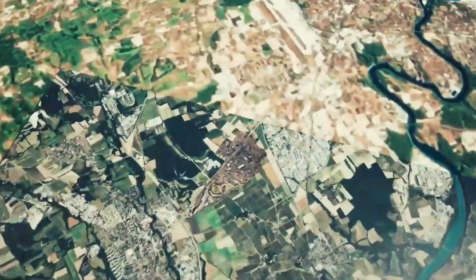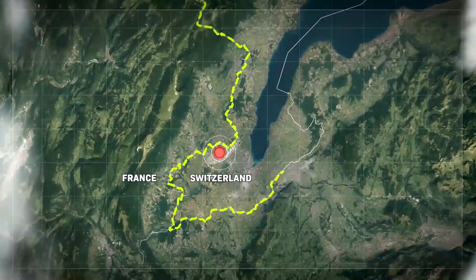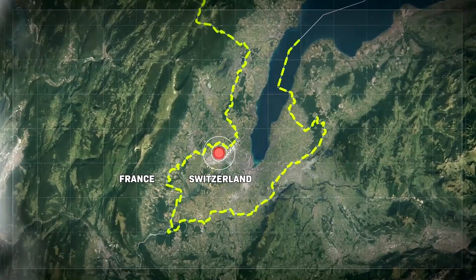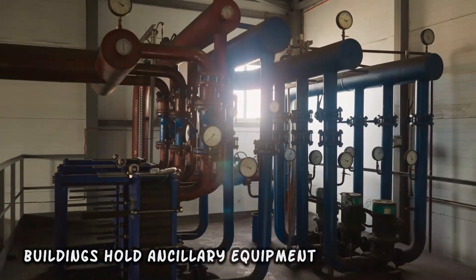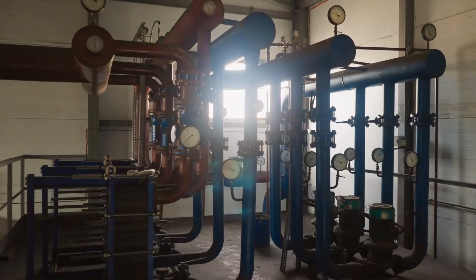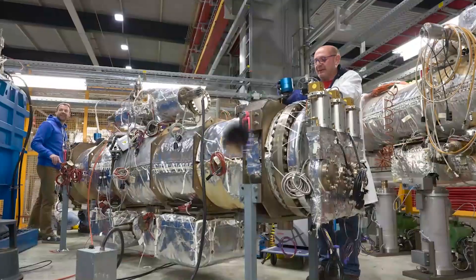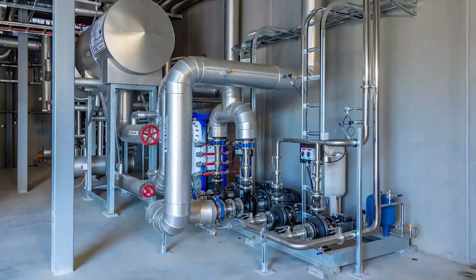The tunnel crosses the border between Switzerland and France at four points, with most of it in France. Surface buildings hold ancillary equipment such as compressors, ventilation equipment, control electronics, and refrigeration plants.